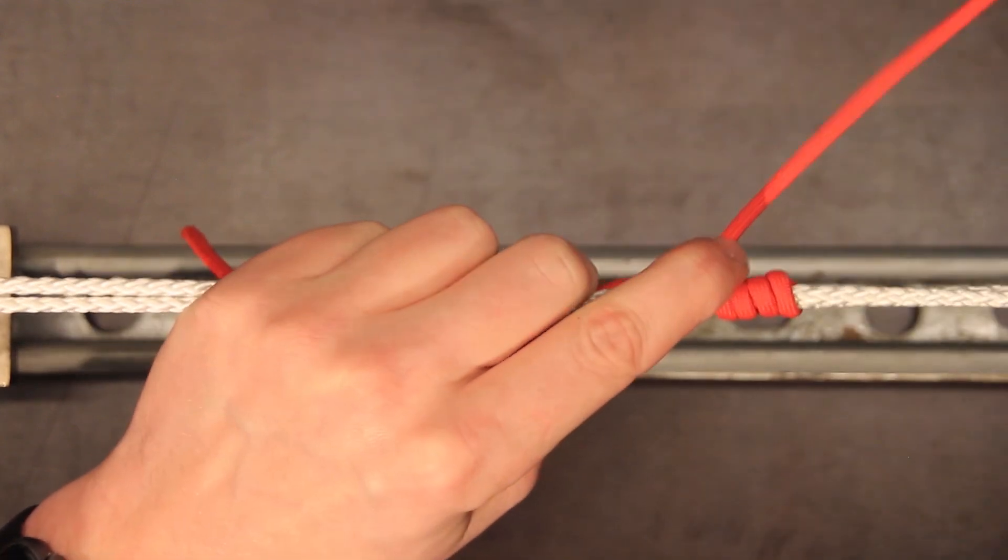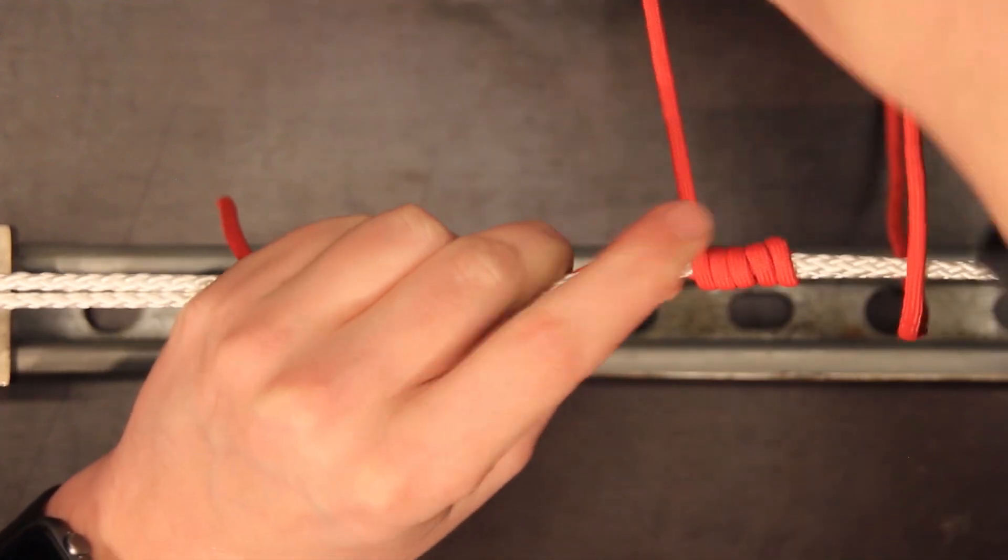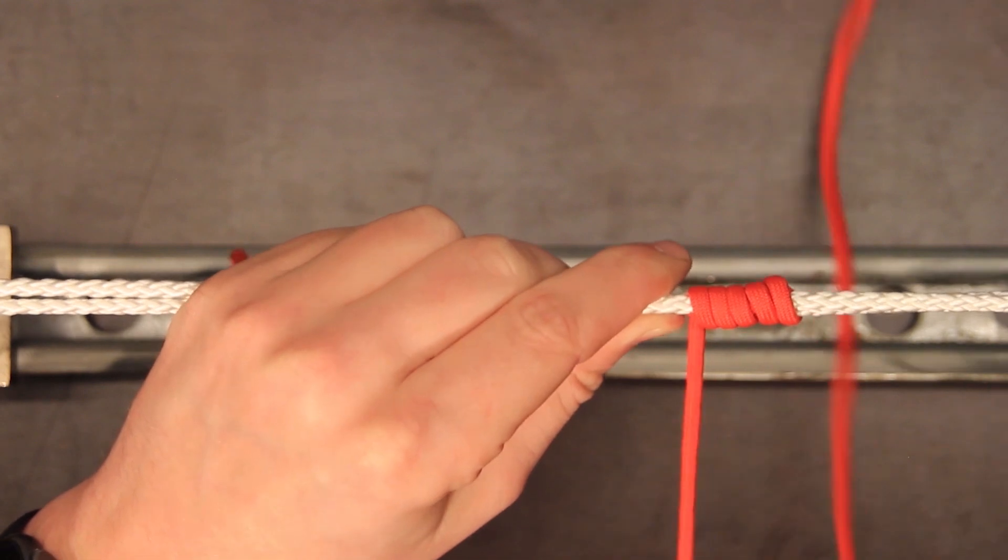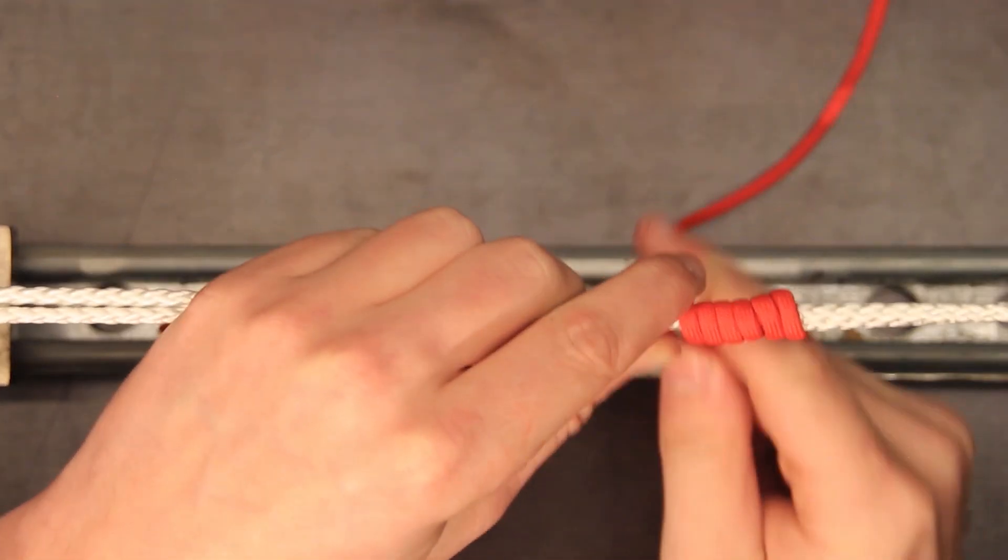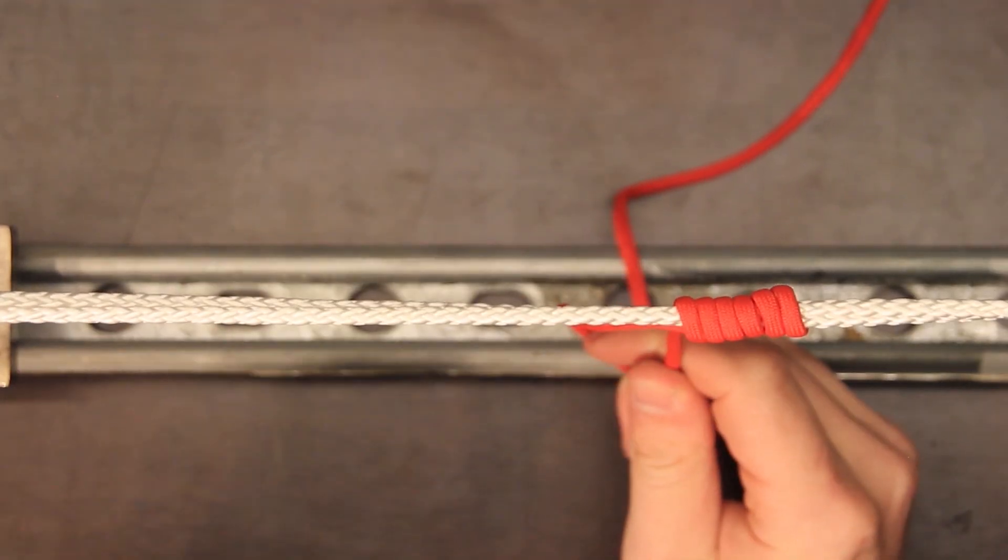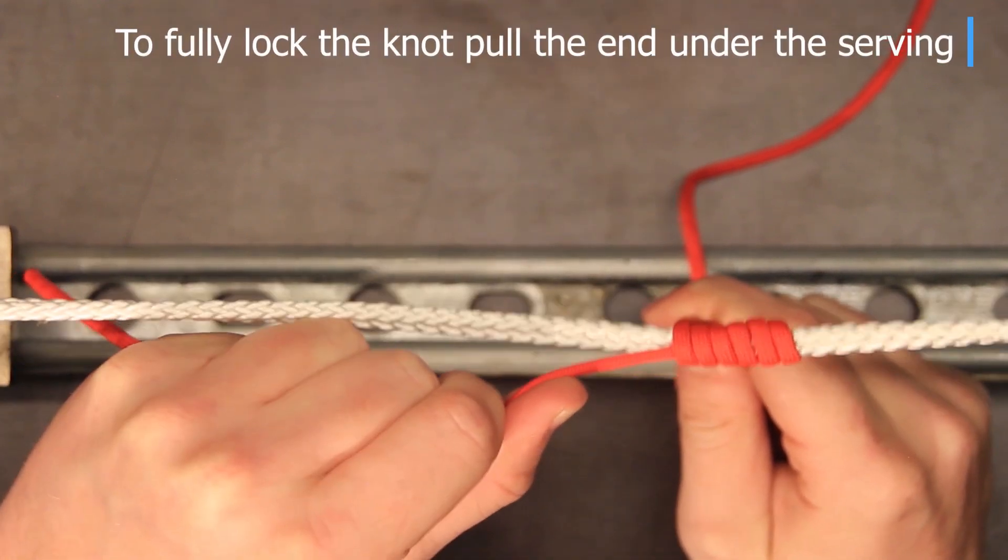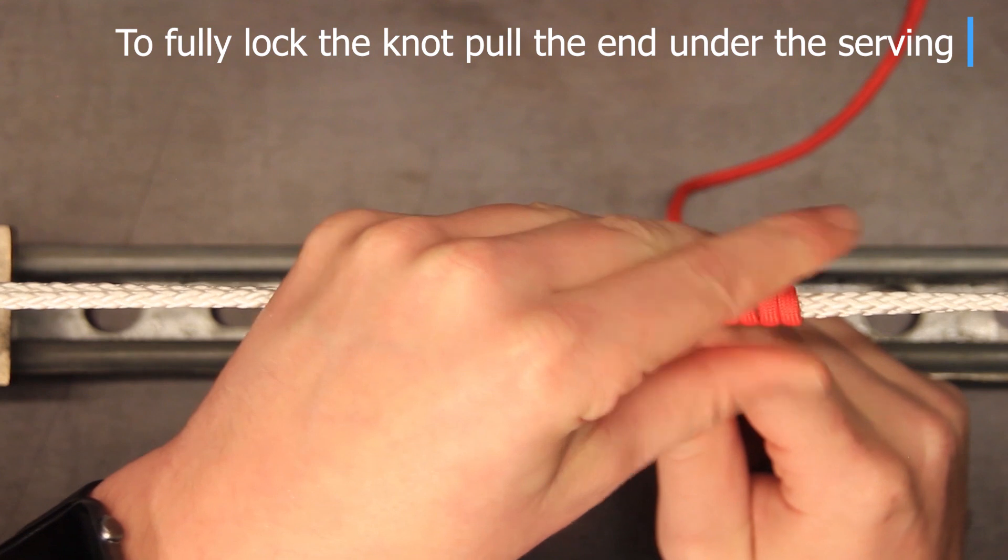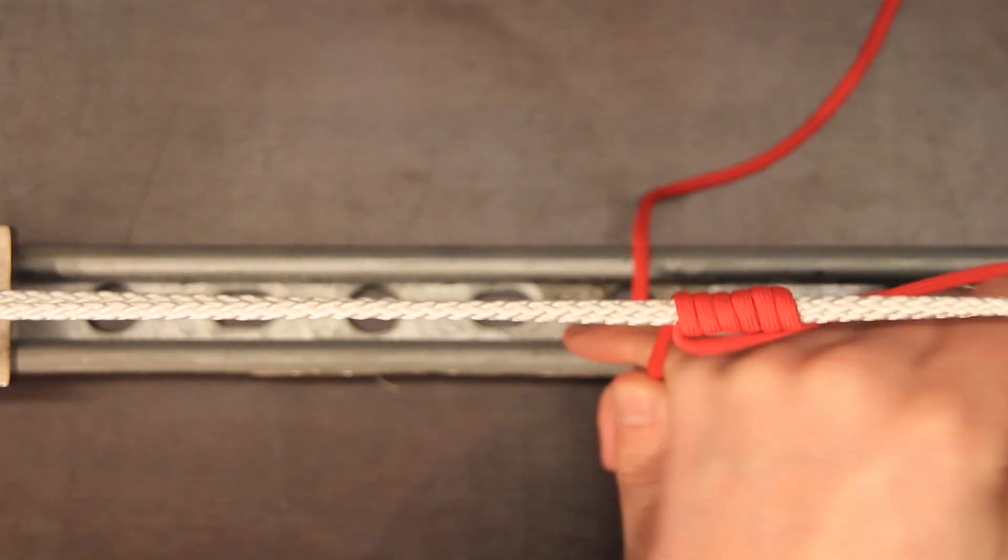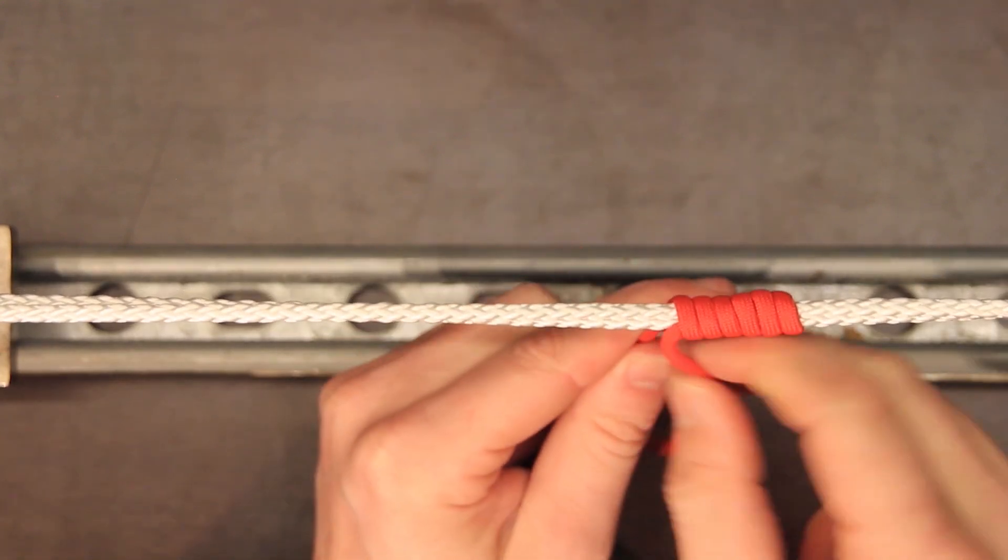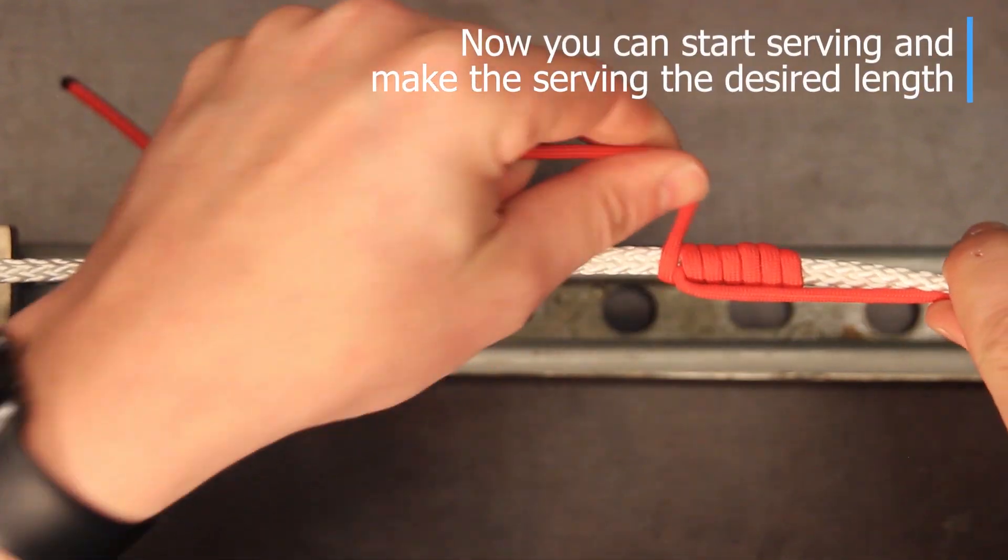In this video I only do five but usually when I'm making a string I try to keep all these servings about 20 turns so they're all the same. So when you finish those 20 turns you can pull it a little tight so that piece of serving will stay in place.